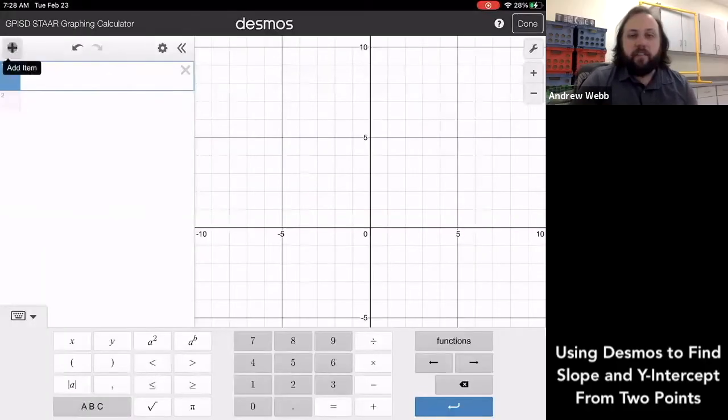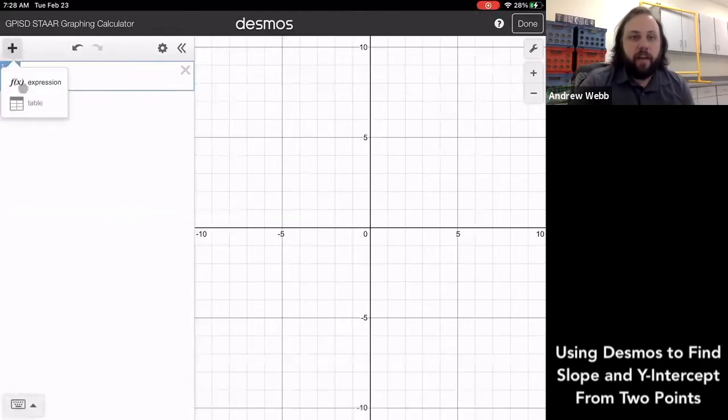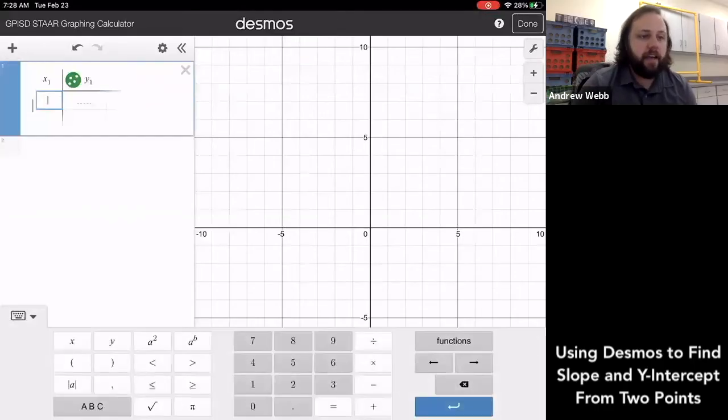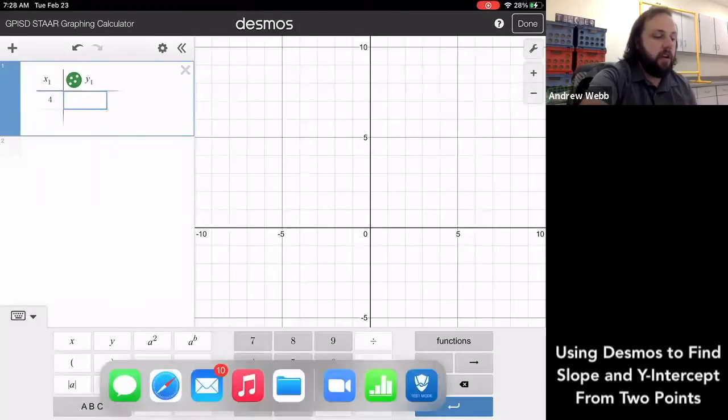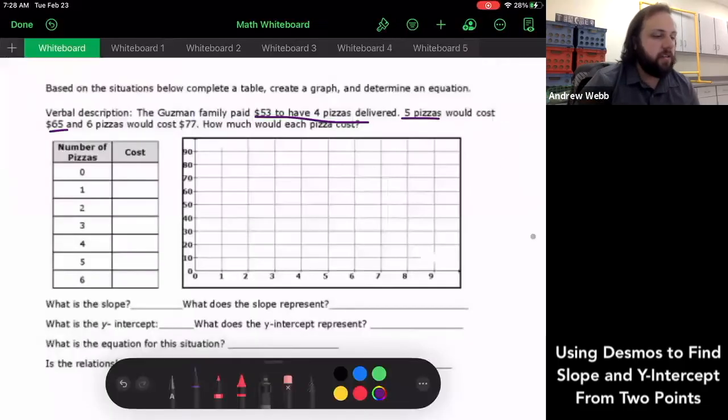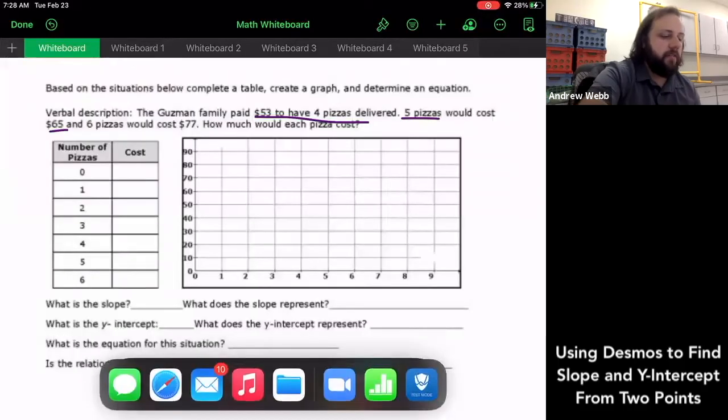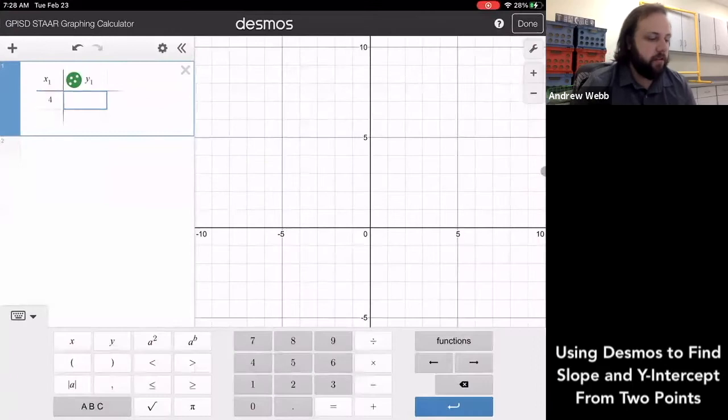And the way I'm going to do this is I'm going to create a table. So I'm going to hit the plus sign, add a table. Now I've got my X and Y values here. I just need to type in those X and Y values. So I had four pizzas cost $53 and five pizzas cost $65. So I'm going to type that in.